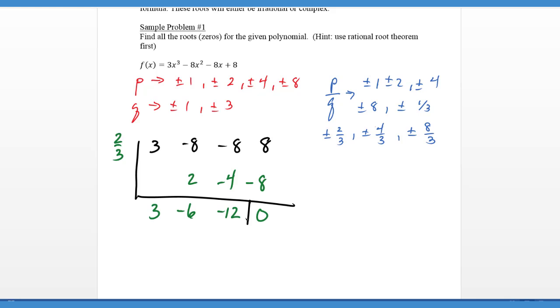And as you can see here, we get a zero, which is what we were looking for. And our depressed polynomial in this case is 3x squared minus 6x minus 12. So let's go ahead and factor this particular polynomial and see if we can break this down a little farther.